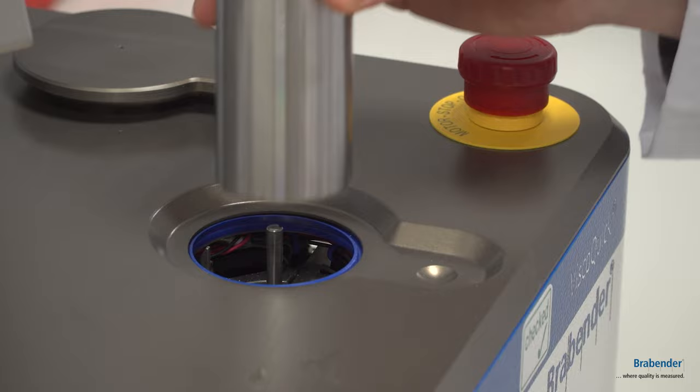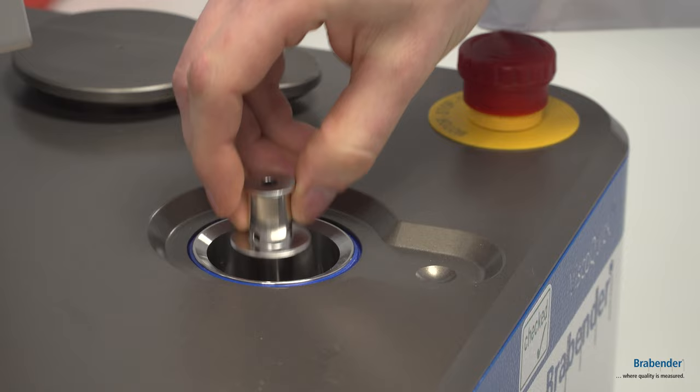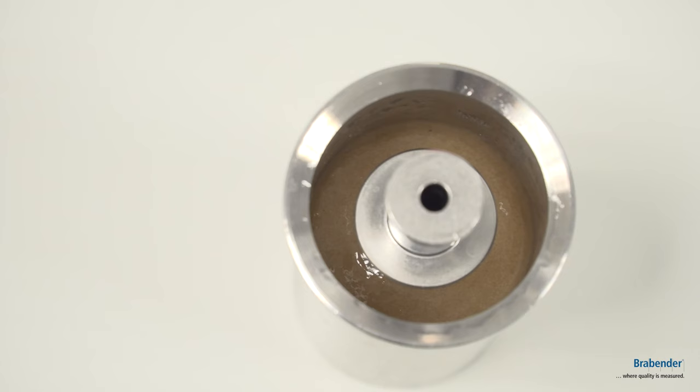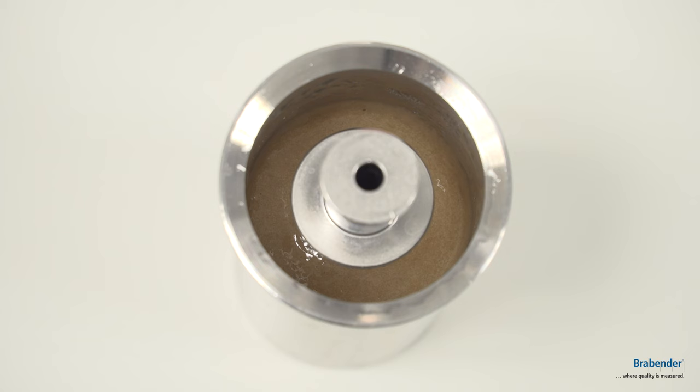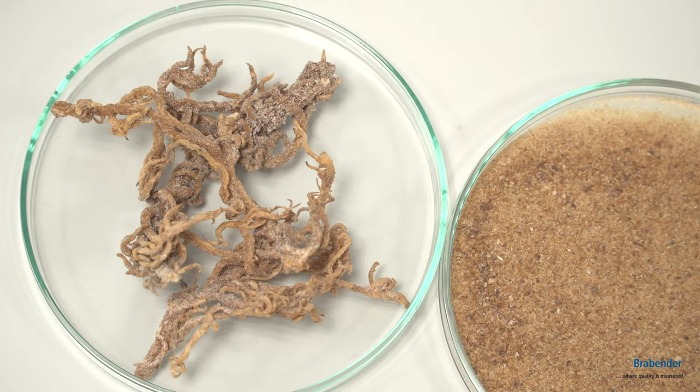For your industrial processing, you need a constant quality of your product in order to run your process most efficiently. Using the ViscoQIC, you can determine this quality of your seaweed product within 20 minutes.